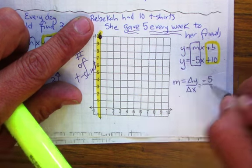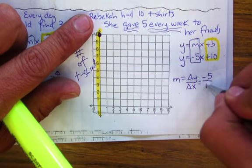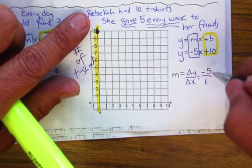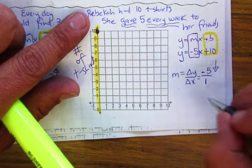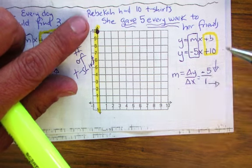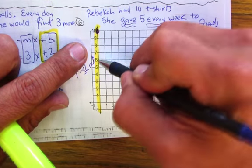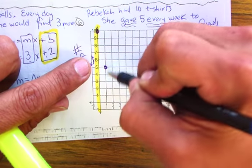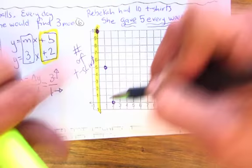Negative 5. For every what? For every week. Every week. So now the 5 it's negative so it's going to go down. And then the x is going to go to the right. So 5 every week. 1, 2, 3, 4, 5. And then 1. 1, 2, 3, 4, 5. And then another one. Alright. So that is my graph.